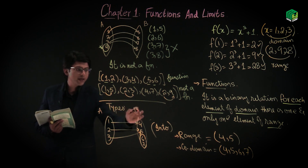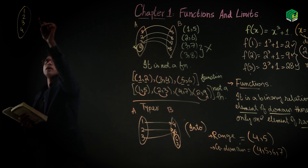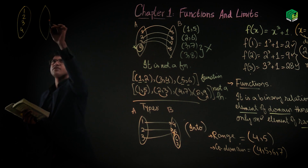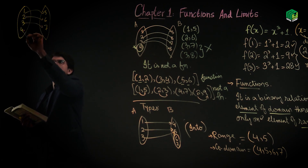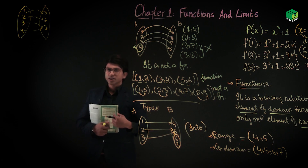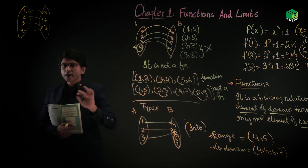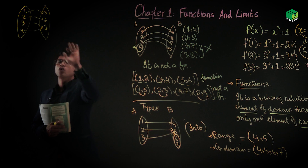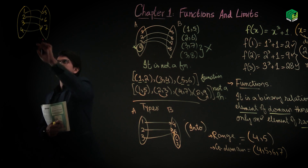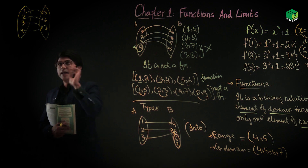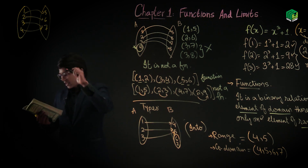Range وہ elements ہیں جن کے اوپر domain map ہو رہا ہے — مثلاً 4 اور 5۔ لیکن co-domain پورا set B ہے یعنی 4, 5, 6, 7۔ 6 اور 7 کے اوپر کوئی domain کا element map نہیں ہوا — وہ بھی co-domain کا حصہ ہیں۔ جس کے اوپر domain map ہو وہ range ہے، اور پورا set B وہ co-domain ہے۔